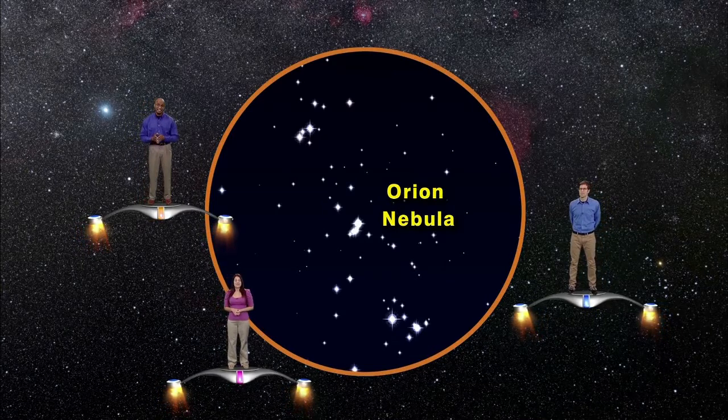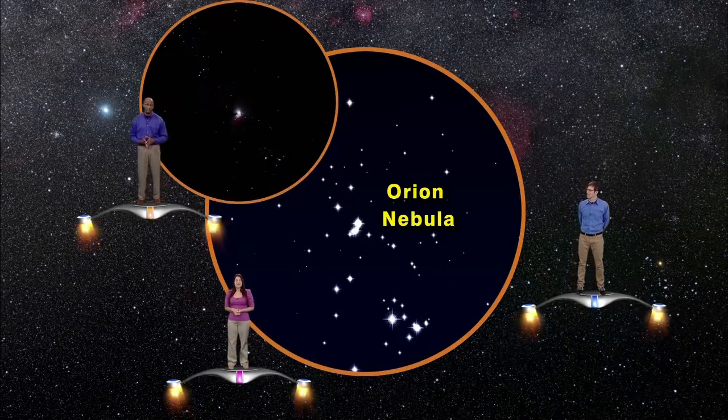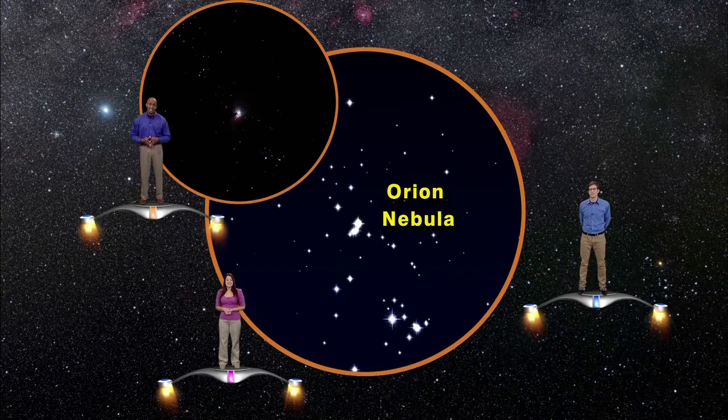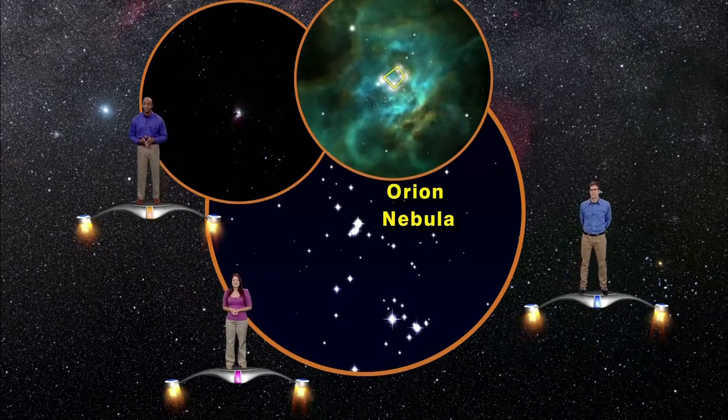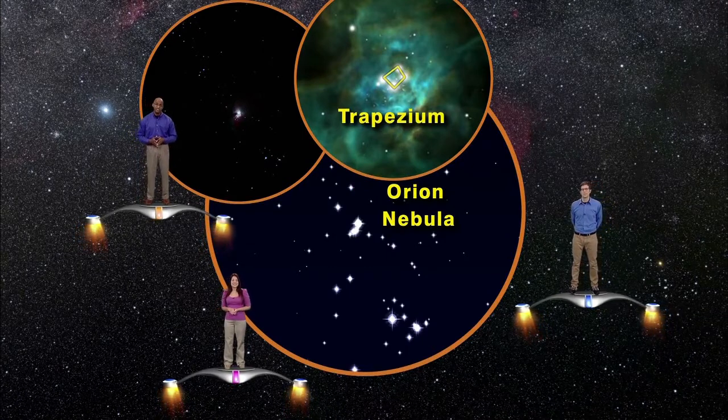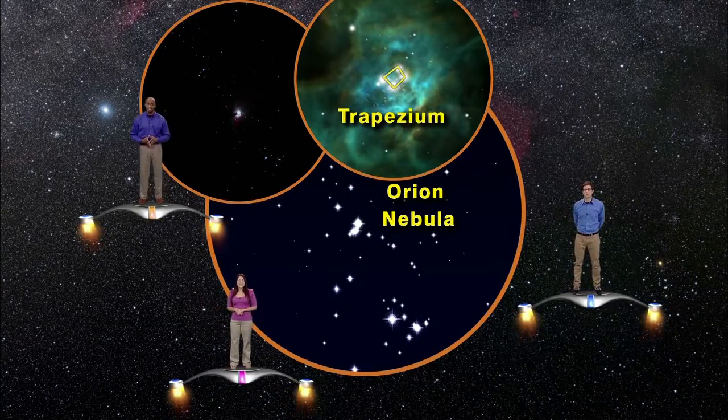In fact, you can see this nebula using even the cheapest pair of binoculars. This cloud is actually illuminated by four recently born stars arranged in the shape of a baseball diamond called the trapezium. And these four stars can actually be seen with a small telescope.